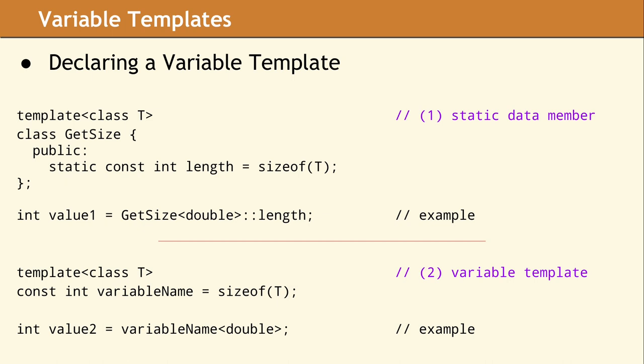Let's compare two blocks of code which are functionally equivalent. In the first block, we have a templated class which contains one static data member, which is initialized to the size of T. The syntax to calculate value1 is complicated, since you must know the name of the static variable.